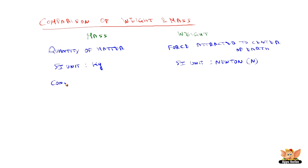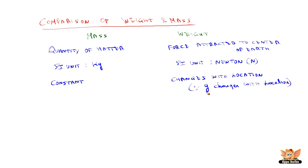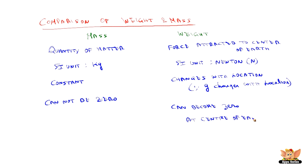Mass is constant wherever the object is, on whichever planet. Weight changes with location because g changes with location — since weight = mg, when g changes, weight also changes. Mass can never become zero; there is no zero-mass concept. Whereas weight can become zero: at the centre of the Earth, g is zero, so weight = mg = 0.